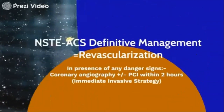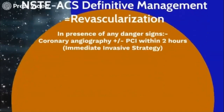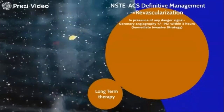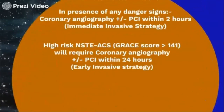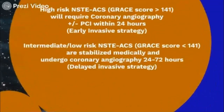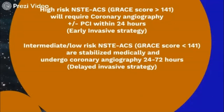In patients who have any of the danger signs — hypotension, signs of heart failure, non-improving angina, or arrhythmias — these are the patients you take for revascularization within two hours; this is called the immediate invasive strategy. The next group are those with high GRACE scores, more than 141, who should be taken up for angiography within 24 hours — this is called early invasive. For intermediate or low risk, GRACE score less than 141, you can wait beyond 72 hours once the patient is stable — this is called delayed invasive.